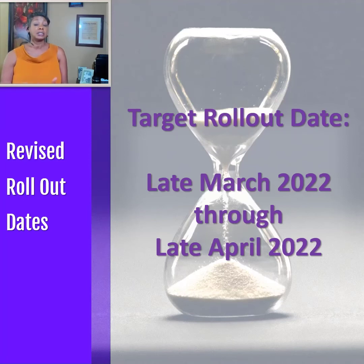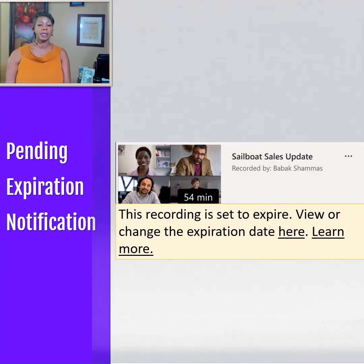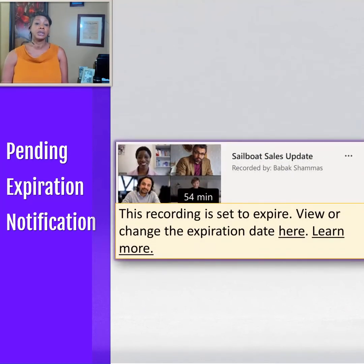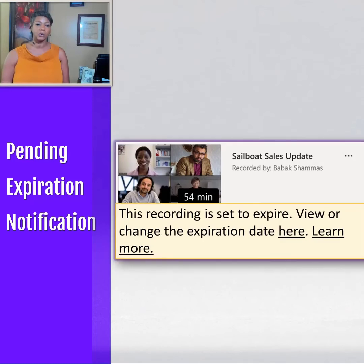System administrators have until March 25th to make sure they want to change any policies before Microsoft makes any updates. Users have been asking how they will know if their tenant has been updated — you'll get a notice similar to the one on the screen that basically says this recording is set to expire. The site owner and co-owners can edit the expiration date if needed.